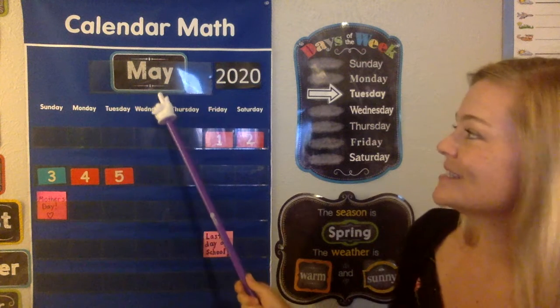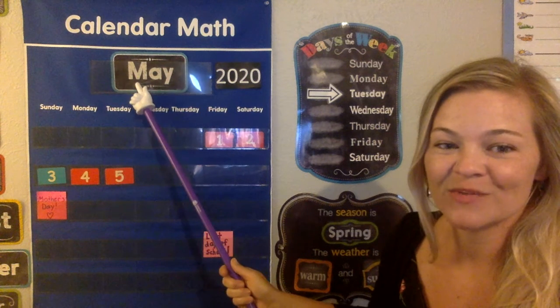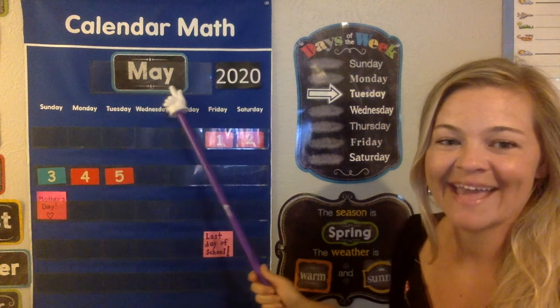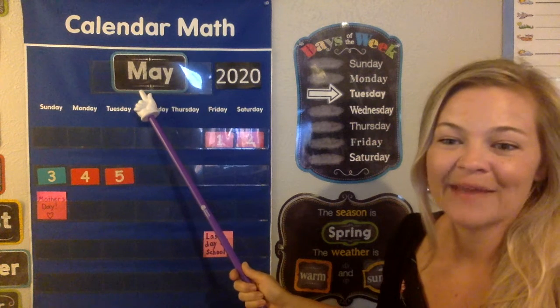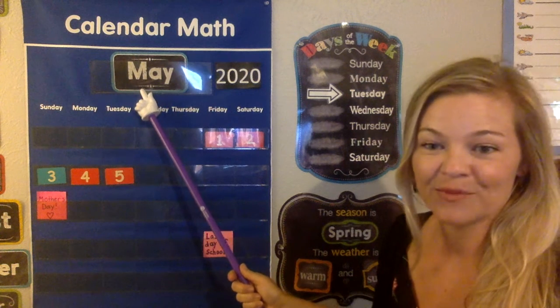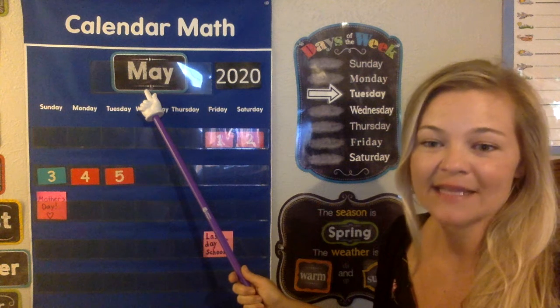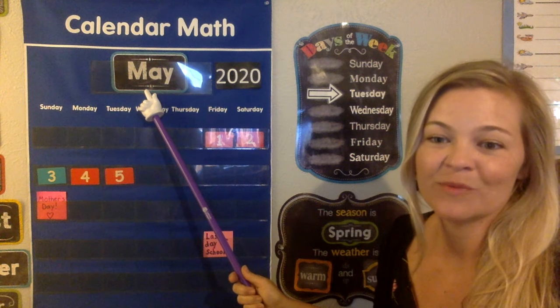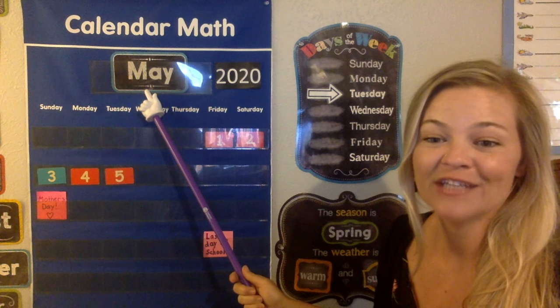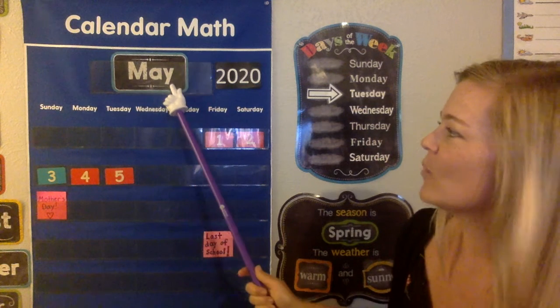I'm pointing to the month. What month is it? Do you remember? It starts with an M. May. So this month is May. That means last month must be April. And if this month is May, that means next month will be — it starts with a J. June. Next month will be June. Okay, so M-A-Y. That's the month. May.